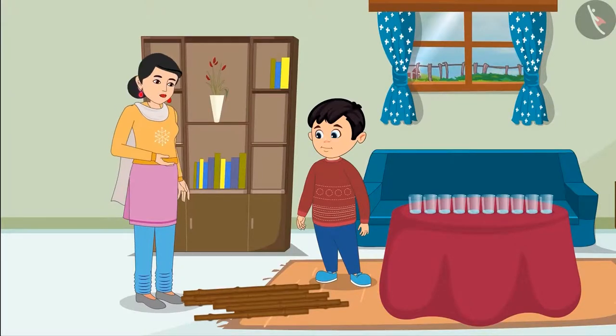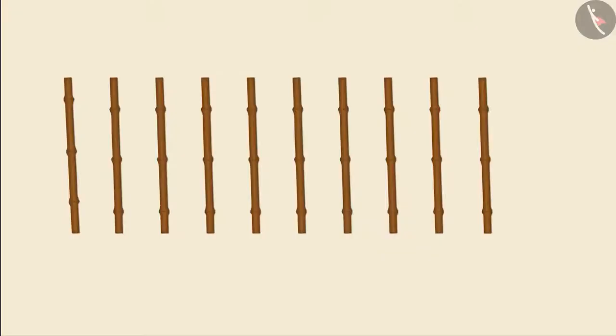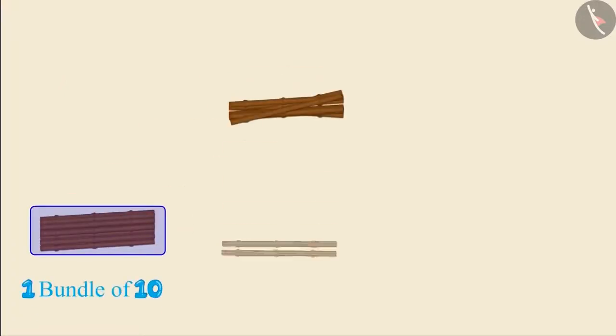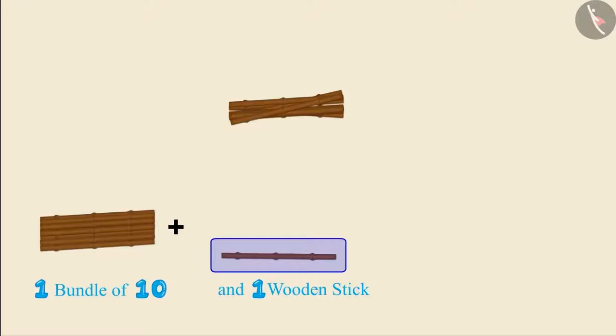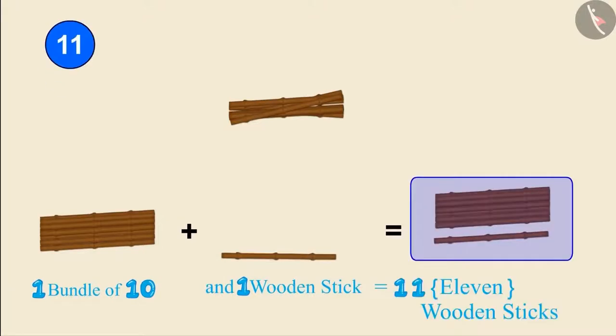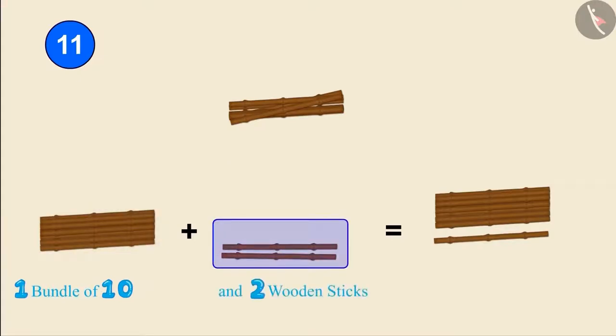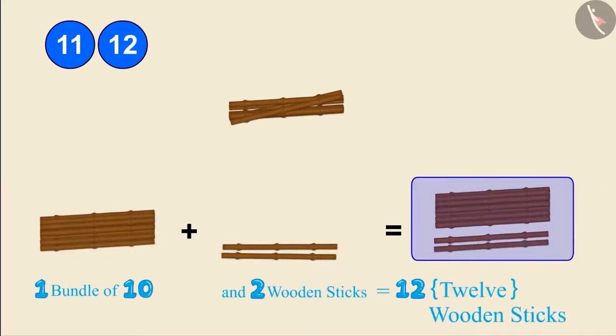Very good. Now, let's count the remaining wooden sticks. These are 10 sticks. So, let's make their bundle of 10 like this. One bundle of 10 and one more wooden stick make 11 wooden sticks. One bundle of 10 and 2 wooden sticks make 12 wooden sticks.